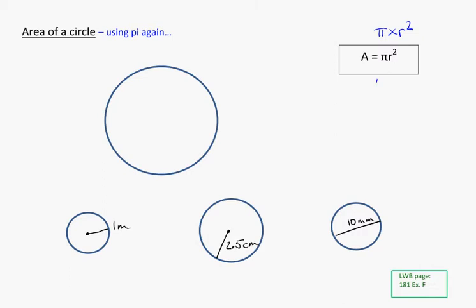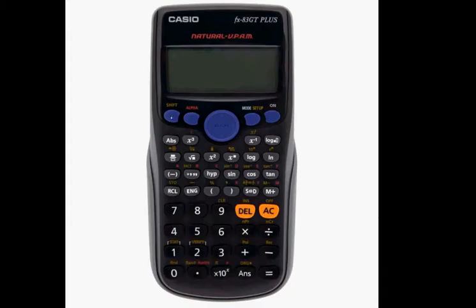And quick reminder again, in your calculator, you use shift and pi to get pi, and you can use the x squared button there to get your squared on the r.